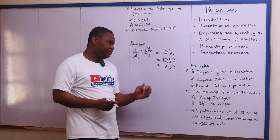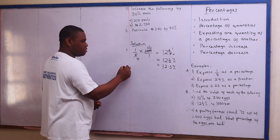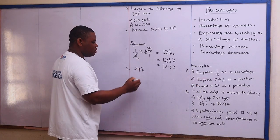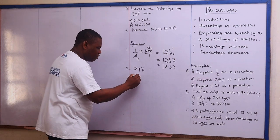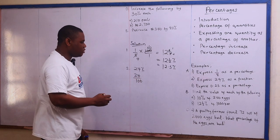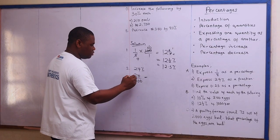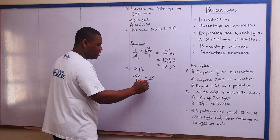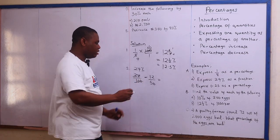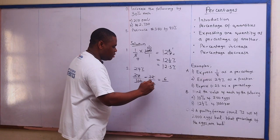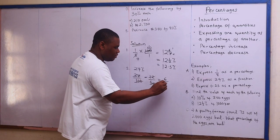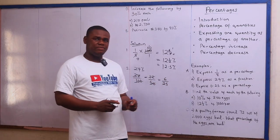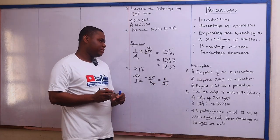Number two says express 24 percent as a fraction. So 24 percent means 24 over 100. Simplifying: two goes into 24 giving 12, two goes into 100 giving 50, then 12 over 50 simplifies to 6 over 25. So 24 percent can be expressed as 6 over 25 as a fraction in its lowest terms.